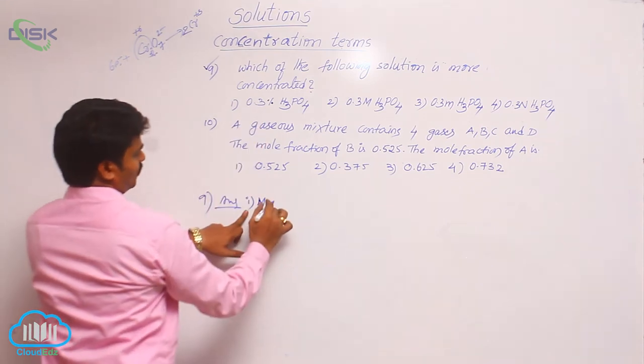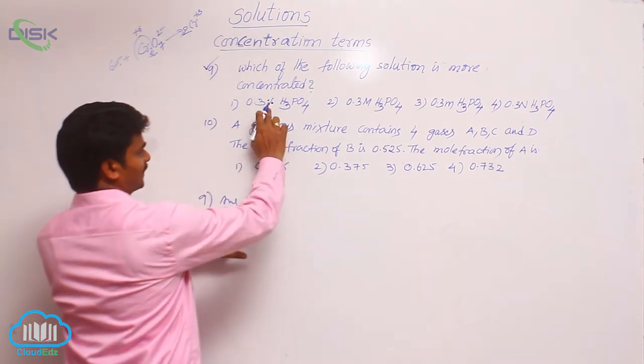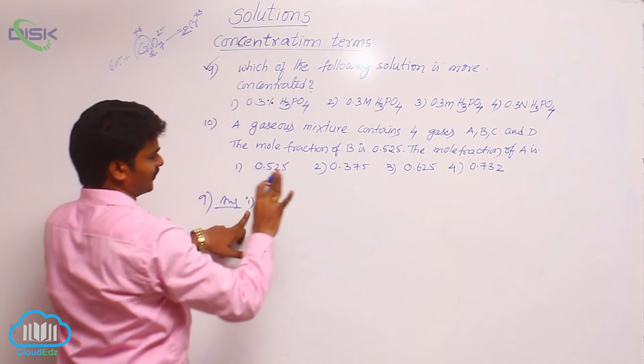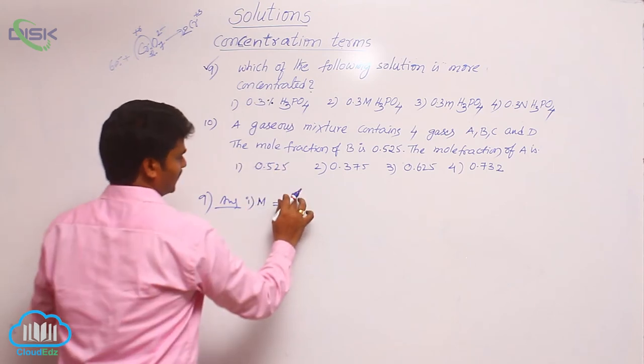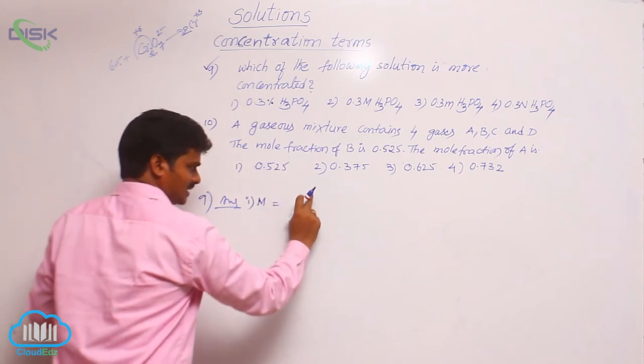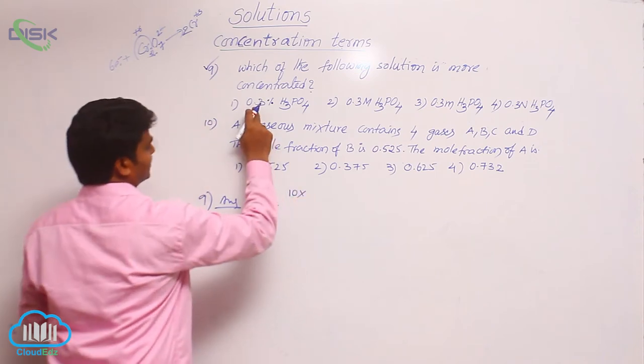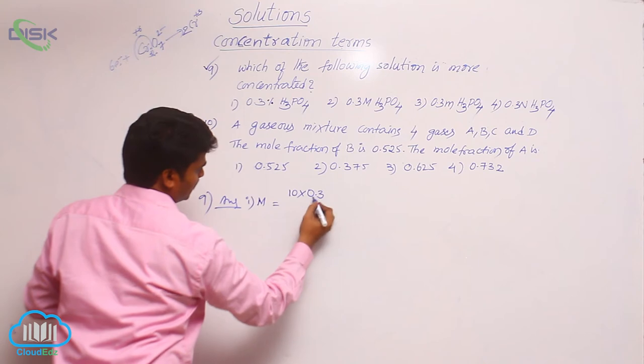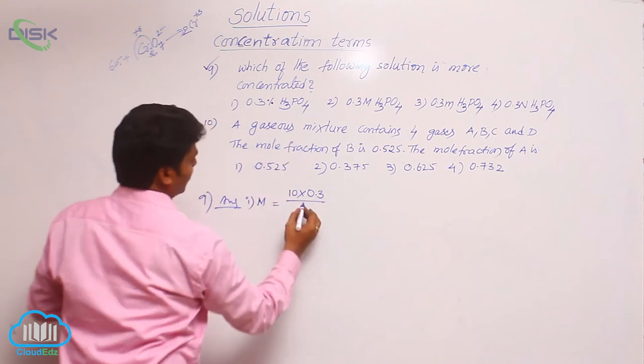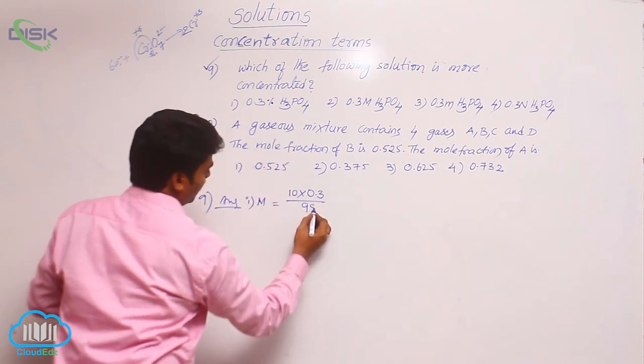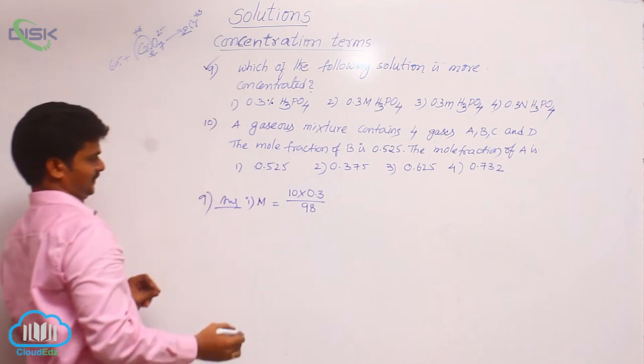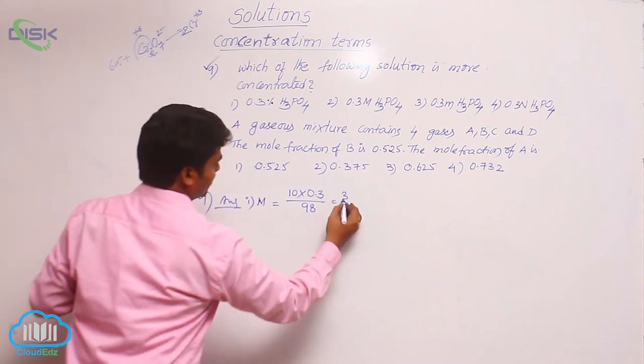From the first option, if it is percentage W by V, what is the formula? Molarity equals 10 times given percentage by molecular weight. That means 10 times 0.3 by its molecular weight. You know H3PO4 gram molecular weight is 98. That means 3 by 98.